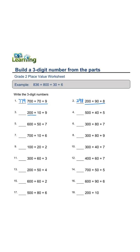200 plus 10 plus 9 equals 219. 500 plus 40 plus 5 equals 545.